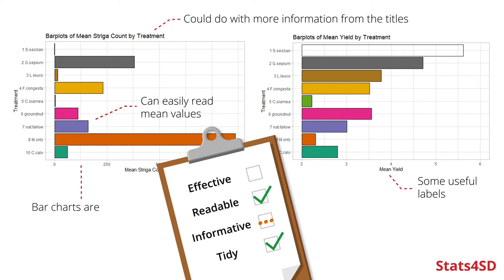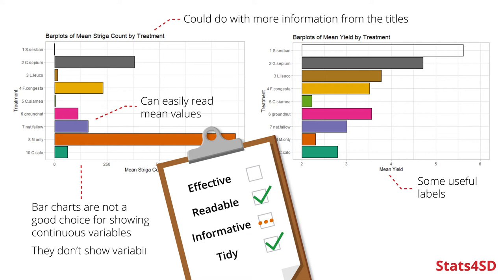Bar charts are not a great pick for continuous variables like striga count and yield, because they can only show you a mean value — they're not showing variability at all. We can also be a little misleading with how we draw axes. In the yield plot, I cheated a little by moving the axis to where the lowest value was, making the difference between treatment five and treatment one look about 15 to 20 times bigger visually. The real difference is more like three times once you account for the actual values — it's slightly misleading, making the difference look larger than it is.